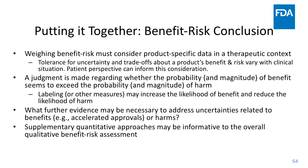Ultimately it's a judgment made regarding whether the probability and the magnitude of benefit seems to exceed the probability and magnitude of harm, and what further evidence might be necessary is really important to consider in making this ultimate weighing. Sometimes, like in the setting of accelerated approval, we have very clear pathways by which we get additional data. In the safety perspective, we might have post-marketing requirements. Supplementary quantitative approaches may certainly be informative to the overall qualitative benefit-risk assessment. In summary, the analysis of condition, the current treatment options, the expected benefits, and the expected risks are the elements that inform our decision-making.